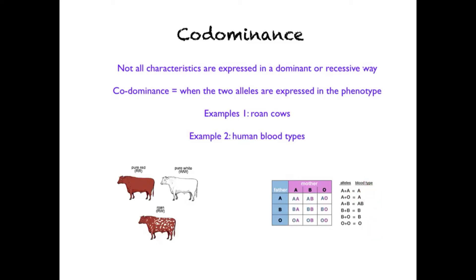If we have an A and A allele, we have blood type A. If we have A and O, we have blood type A again, as A is dominant over O. If we have alleles A and B, we end up with AB blood type — completely different to A or B alone. BB gives blood type B, BO gives blood type B, and two O's gives blood type O. So within human blood types, three alleles can create four different phenotypes depending on the allele combinations.